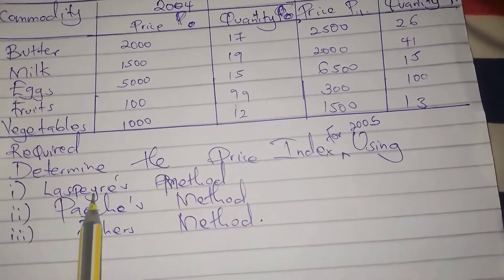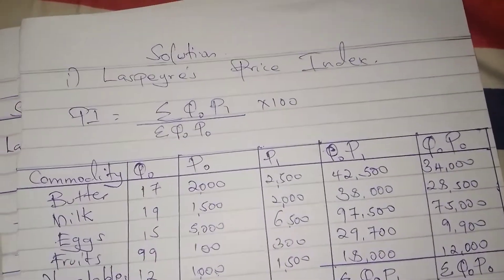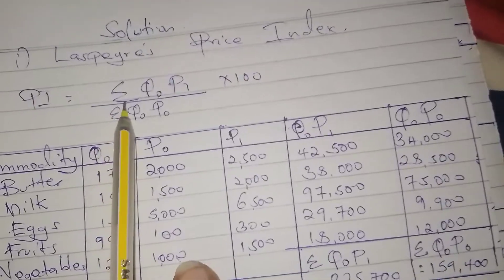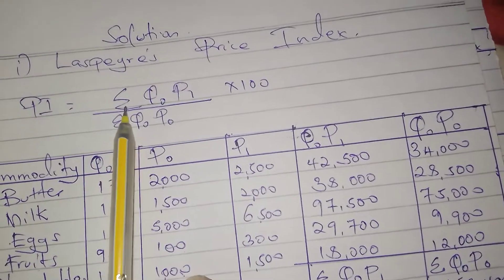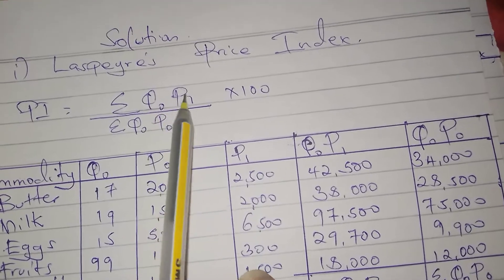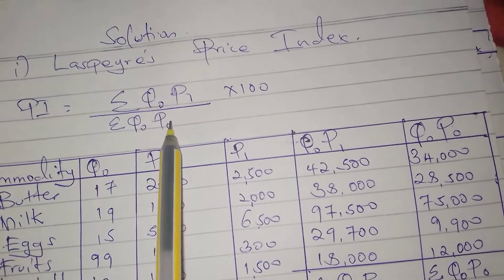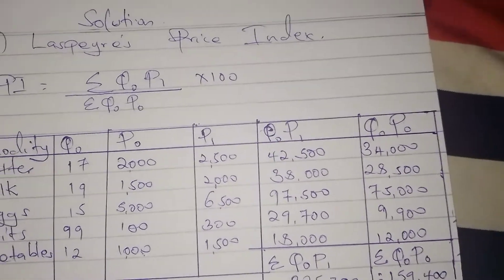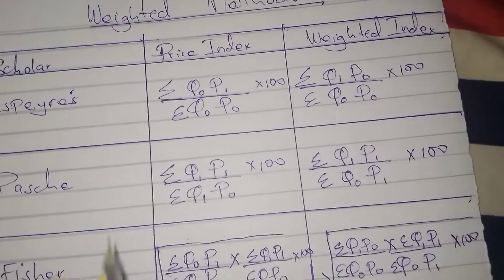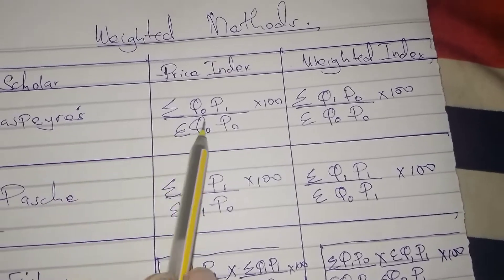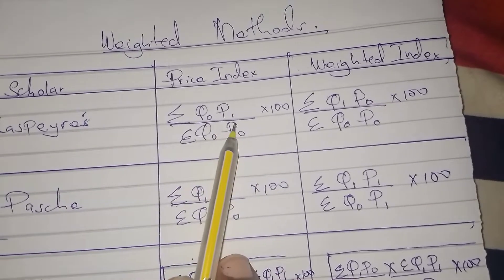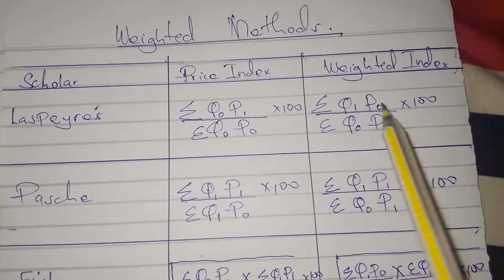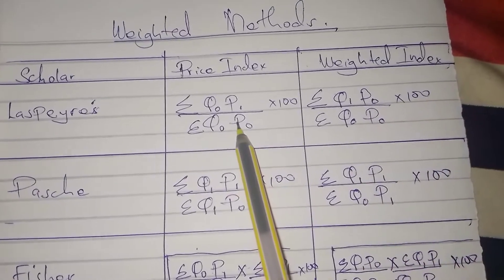We shall start with the Laspeyres method. The formula for the Laspeyres price index is: summation of q0·p1 divided by summation of q0·p0, times 100. In the previous video we looked at the formulas for these three different scholars. They asked for the price index, so this is the formula we are using.